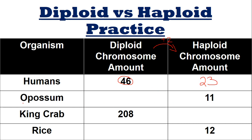Opossums. This time they give us 11 chromosomes in the haploid and we need to get to diploid. If you're going from haploid to diploid, you multiply by two. So 11 times two is 22.